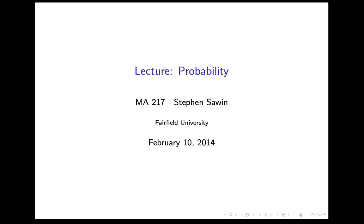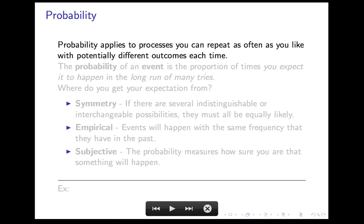This is a Lecture on Probability for MA217. At the beginning of the semester, we talked about probability and applied our intuition, which worked pretty well until it didn't. It failed miserably in the Monty Hall problem, and that showed us the need for a more careful and precise way to talk about probability — one that would allow us to decide for sure what works and what doesn't. So that's what we're going to develop here.